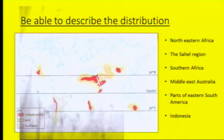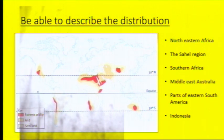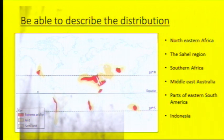You need to be able to describe the distribution using a map to show where drought is happening. In this map, you can see that we've got a lot of drought in north-eastern Africa, in the Sahel region, in southern Africa, the Middle East, Australia, parts of South America, and Indonesia.